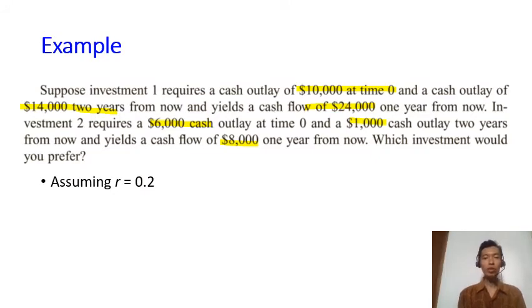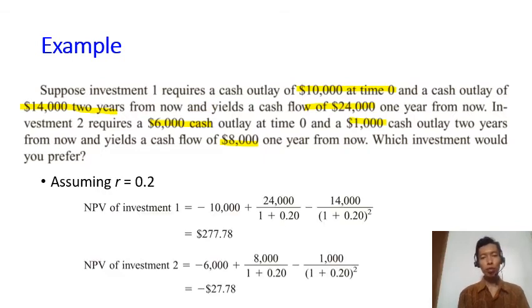Assuming that the annual interest rate is twenty percent or zero point two. Using the NPV formula, you may compute that the value at time zero remains the same. We do nothing.